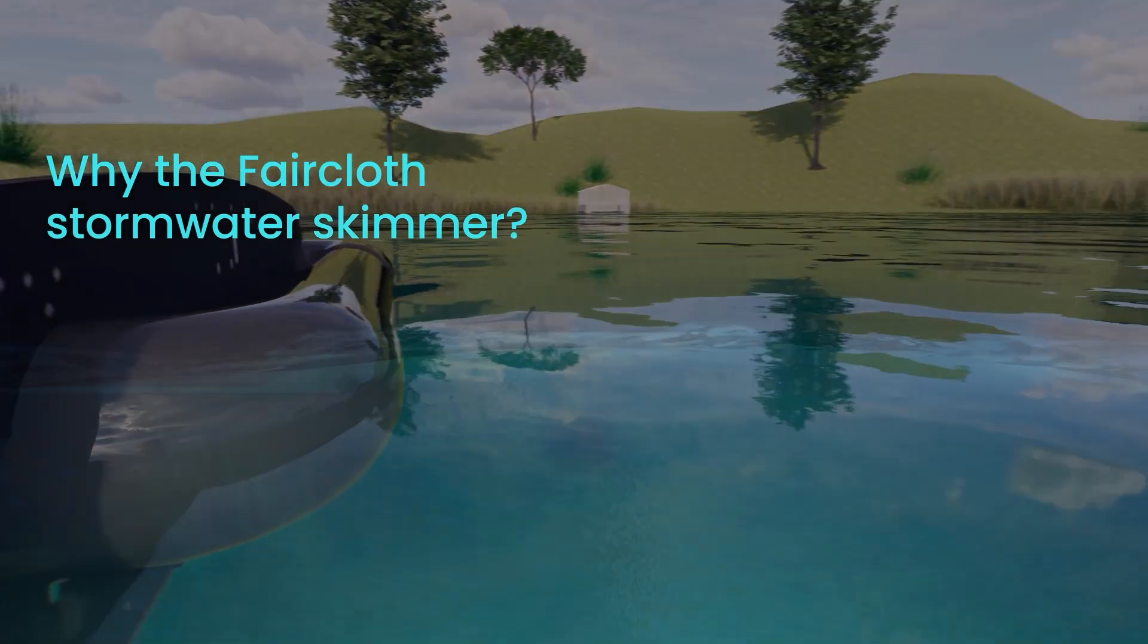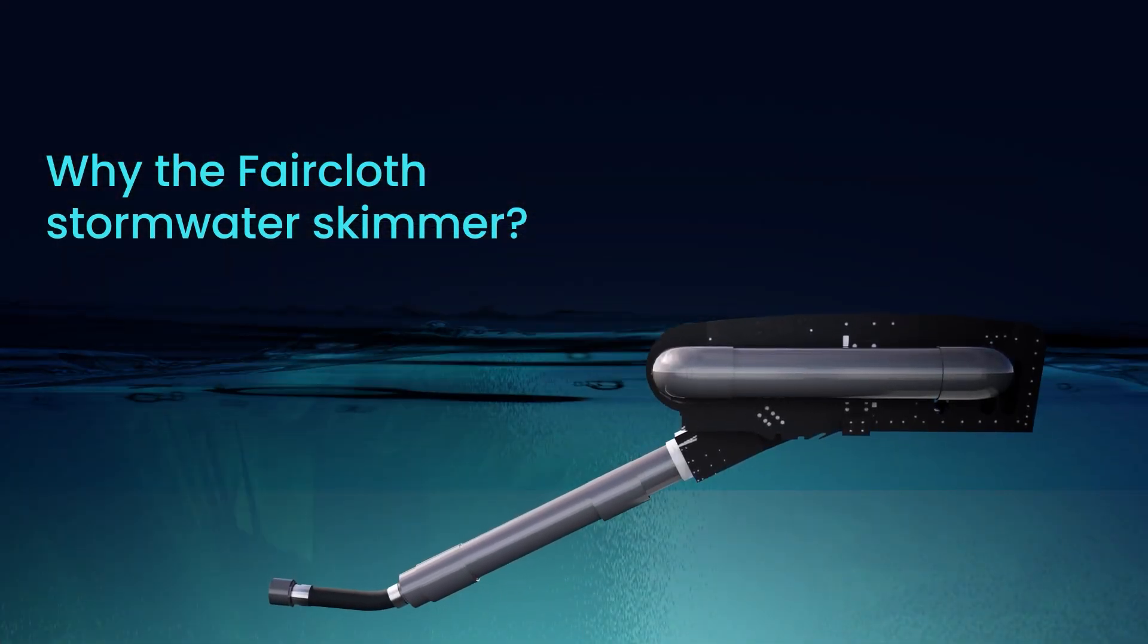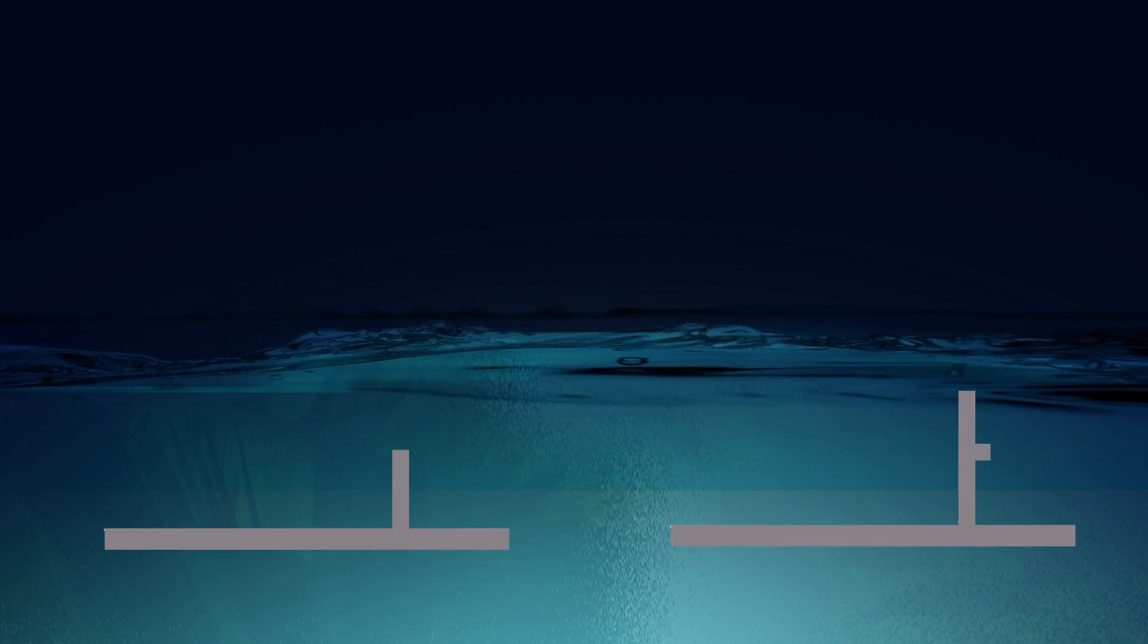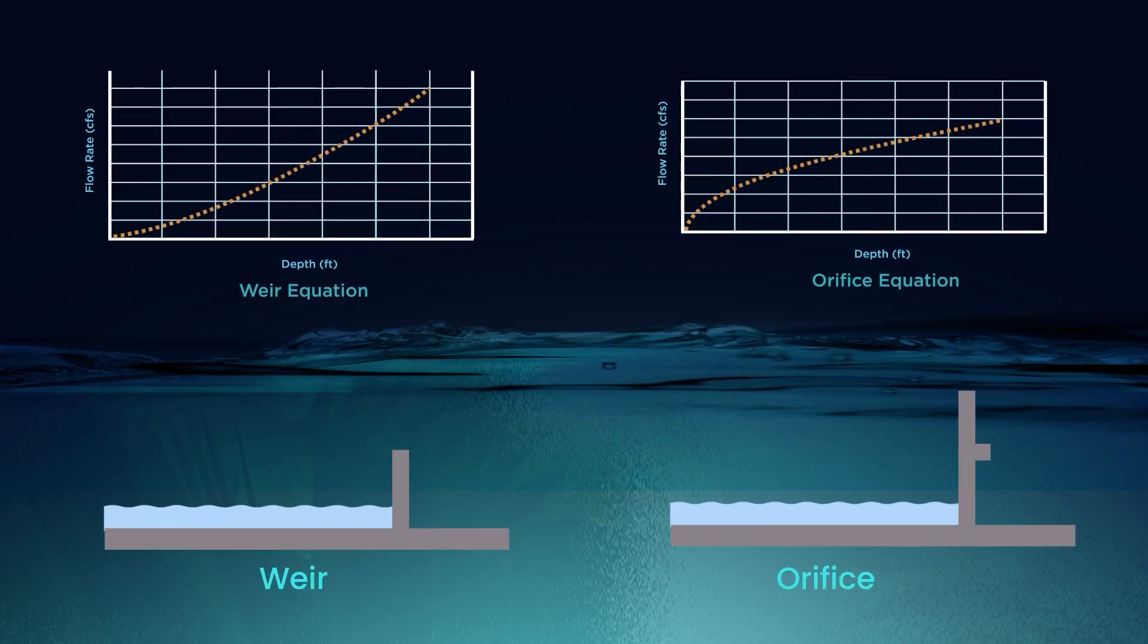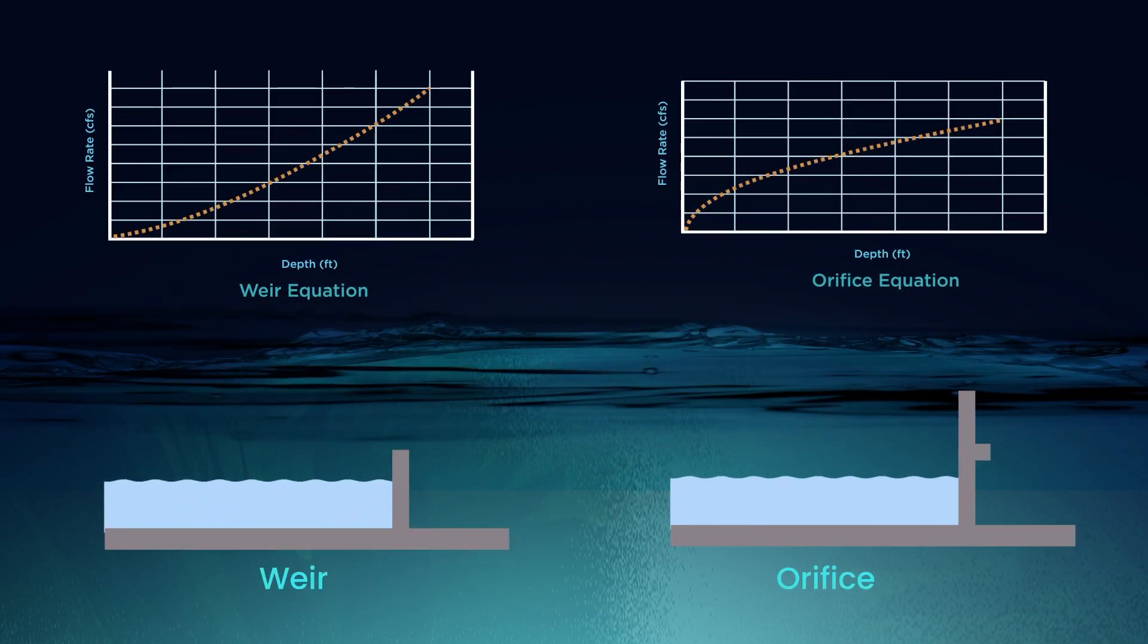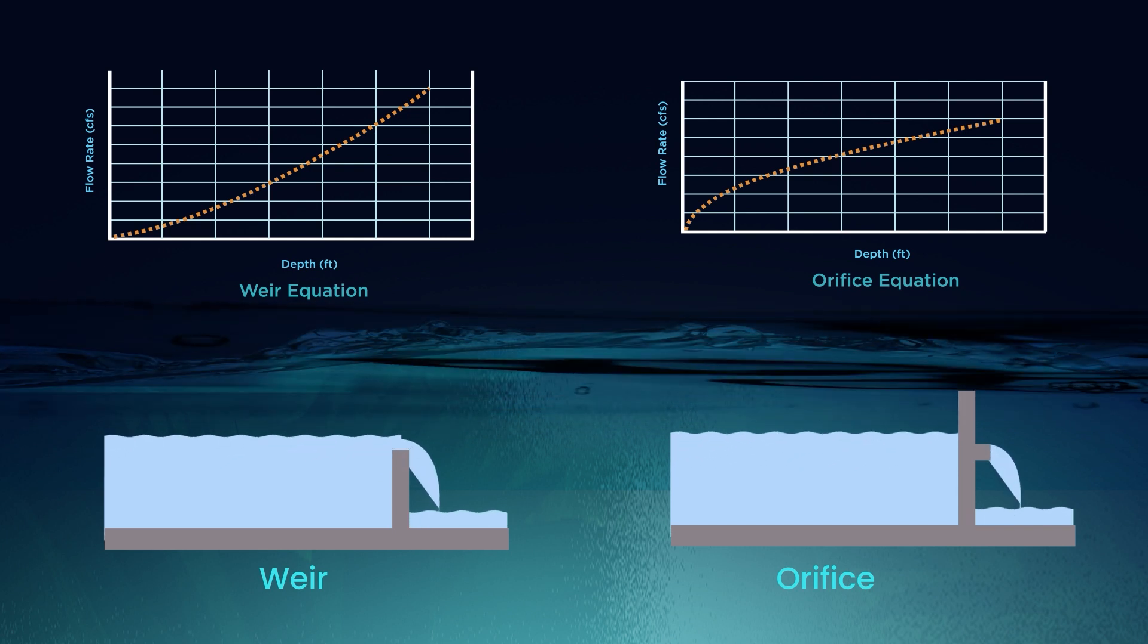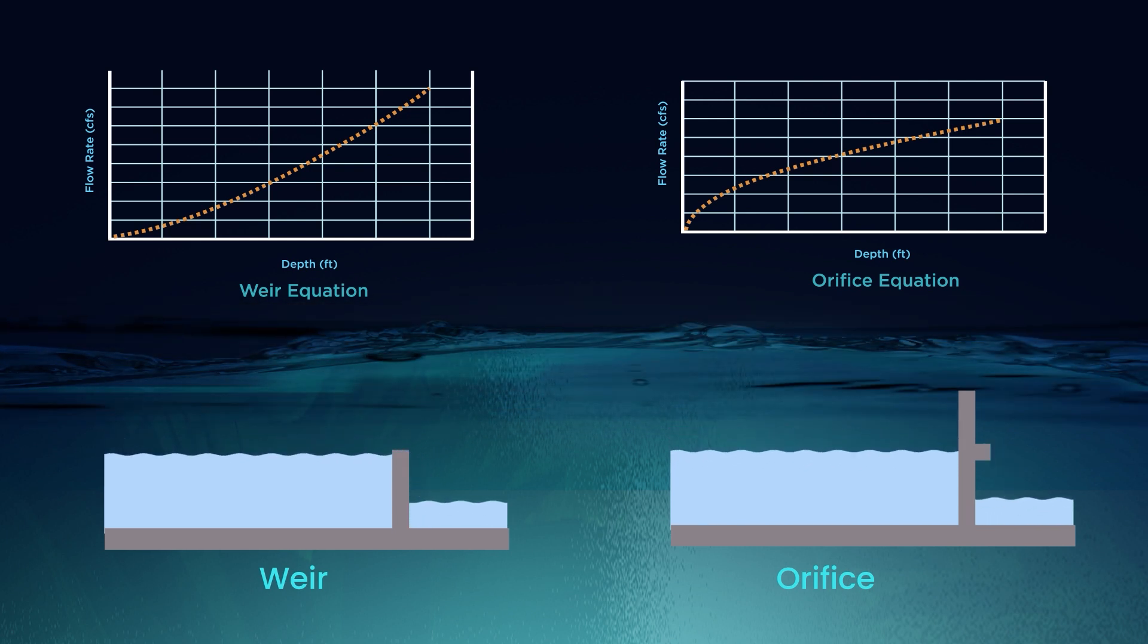So why the Faircloth Permanent Stormwater Skimmer? Historically, the traditional method for flow control for detention systems has been weirs and orifices. What weirs and orifices have in common is that with increasing water depth or head, the flow rate increases, and likewise the flow rate decreases as the water depth falls.